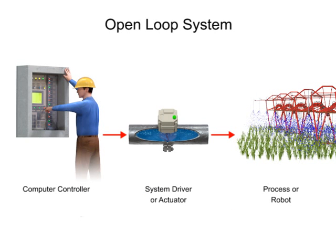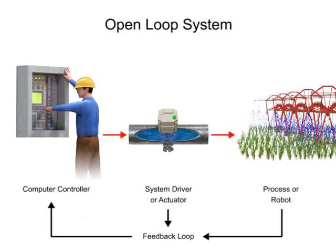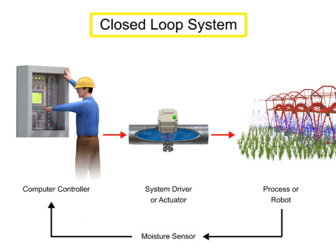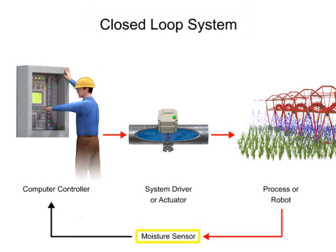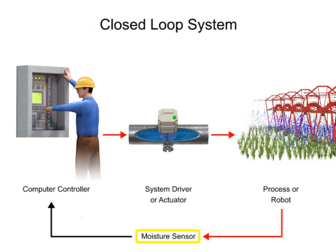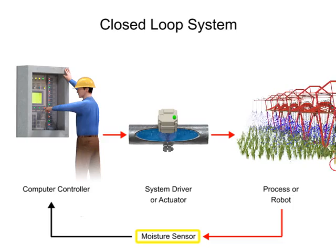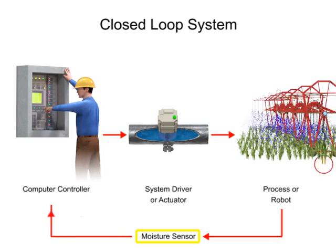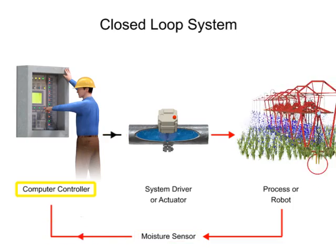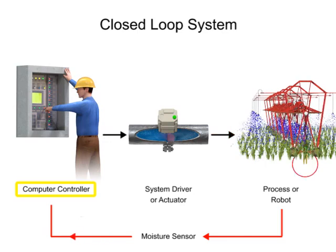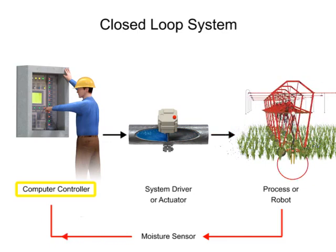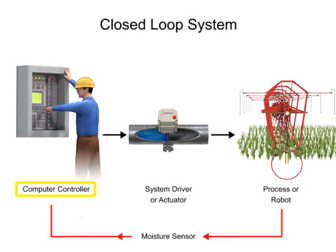In our previous example of a sprinkler, the system was open-loop because the controller received no feedback. But if a moisture sensor is added, it becomes a closed-loop system. The sensor measures the moisture density of the soil and sends that information back to the computer controller, which can then make adjustments to the quantity of water coming from the sprinkler.